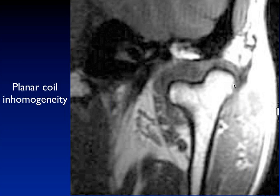Here is a planar coil placed next to the temporomandibular joint — we can see the condyle right in the center of the image. Notice that with a planar coil, you're very sensitive to signal close to the coil, but it drops off fairly rapidly. This gives very poor signal-to-noise on one side of the image and very high signal-to-noise on the other. This lack of homogeneity makes single-loop coils non-optimal, though we worked with them for many years.